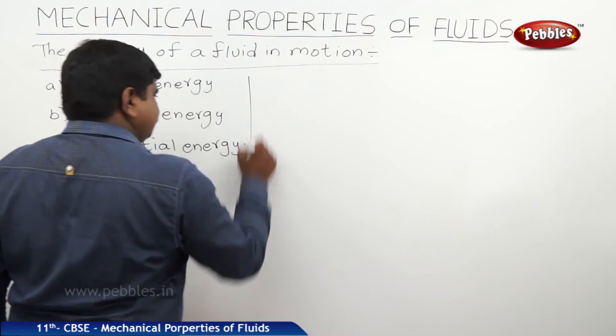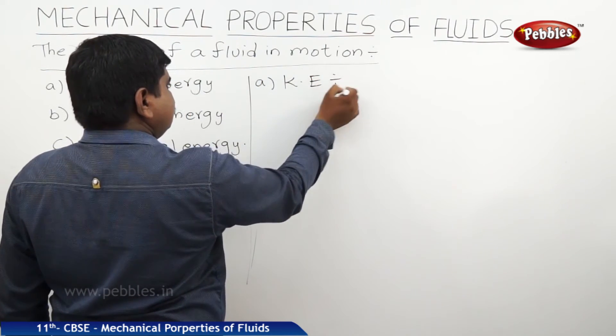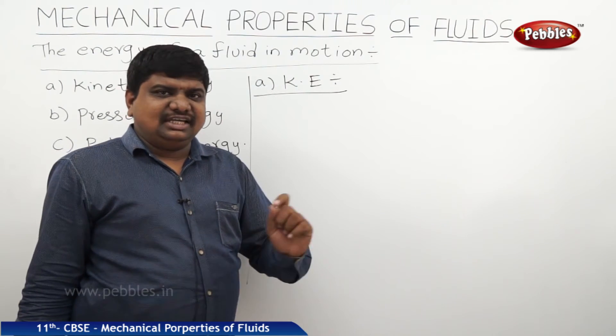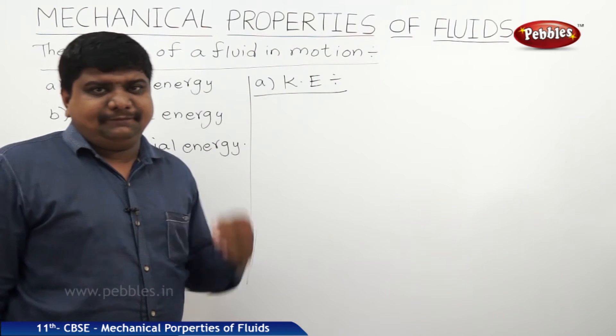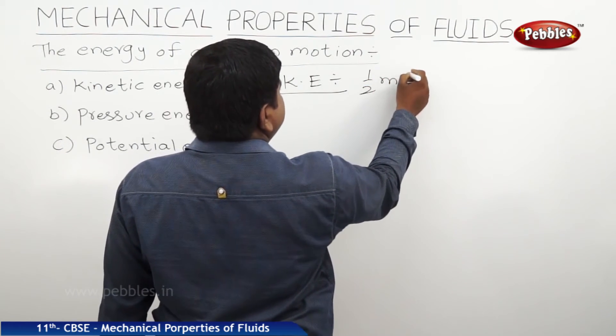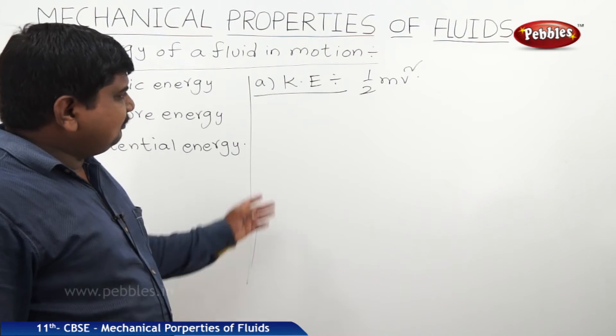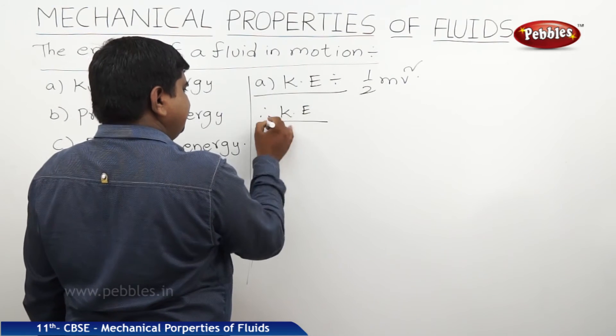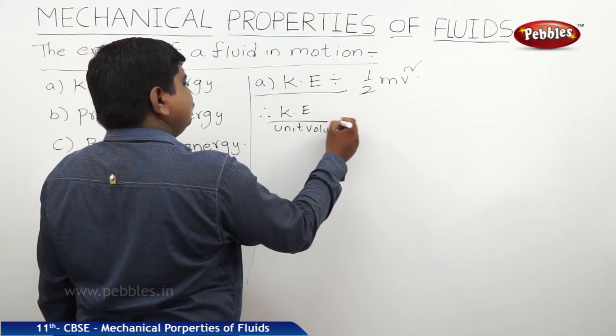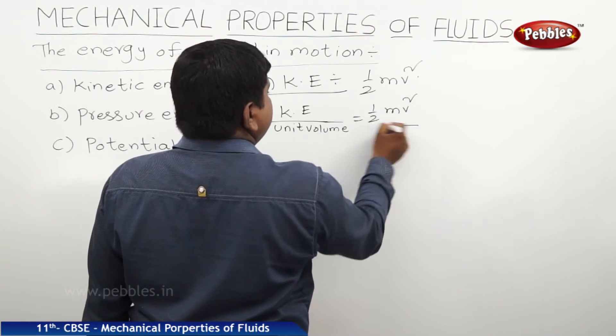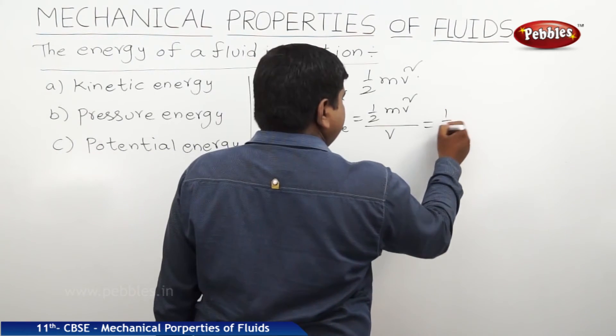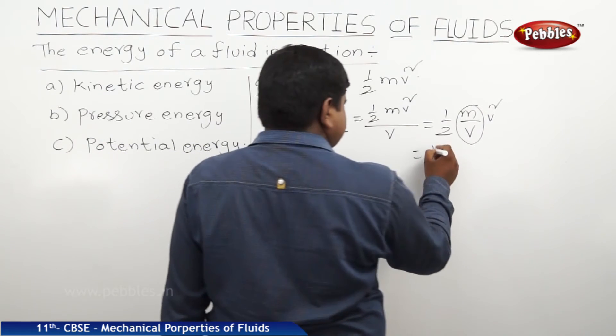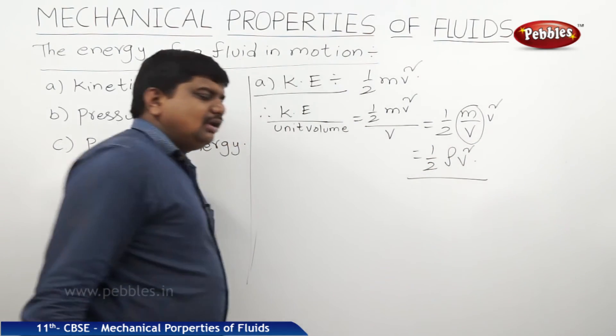First, kinetic energy. When a fluid is in motion, each fluid element moves with velocity V. The general expression of KE is half MV square. But when fluid flows through a tube, we consider kinetic energy per unit volume. Therefore, KE per unit volume equals half MV square by V, which is half M by V times V square. Mass by volume is density, therefore it is half rho V square. This is called kinetic energy per unit volume.